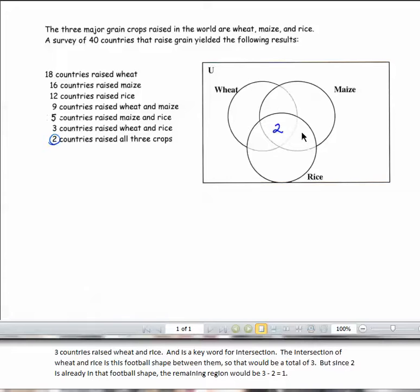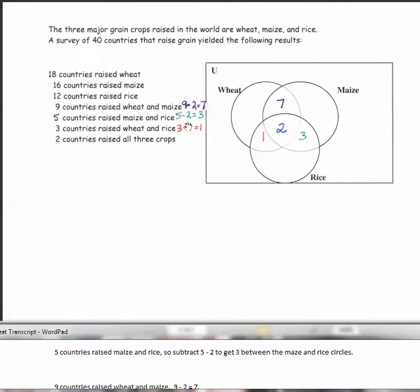And we'll do a similar calculation for the other intersections. Five countries raised maize and rice. So subtract 5 minus 2 to get 3 between the maize and rice circles.